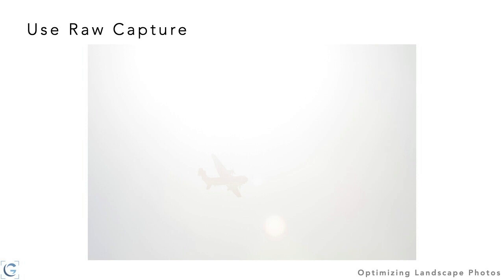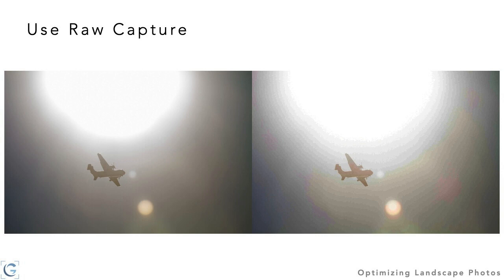I processed the raw image in Lightroom Classic or Camera Raw, then converted the original raw to JPEG and tried to achieve the same result. On the left is the image adjusted from the raw capture; on the right is based on the equivalent of a JPEG. You can see bands — very poor gradations on the right versus smooth gradations on the left. That is the key benefit of higher bit depth that raw gives us compared to JPEG.